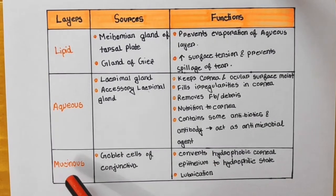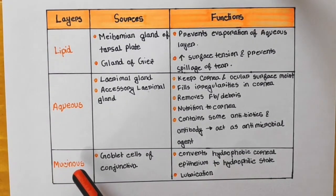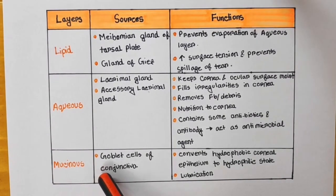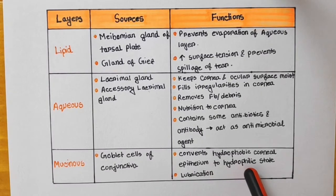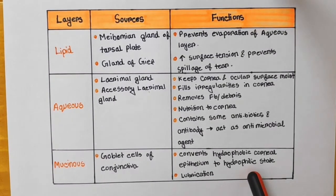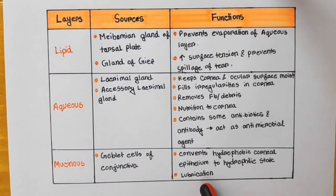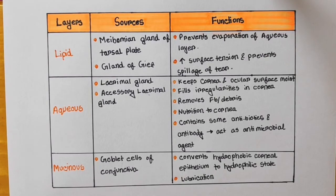Now there is another layer which is the mucinous layer. The source is goblet cells of the conjunctiva. It converts the hydrophobic corneal epithelium to a hydrophilic state and also causes lubrication. I hope you have liked this lecture. If you liked it, please give a thumbs up and subscribe to my channel.